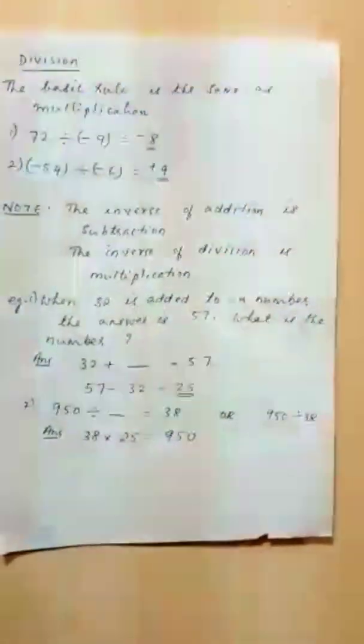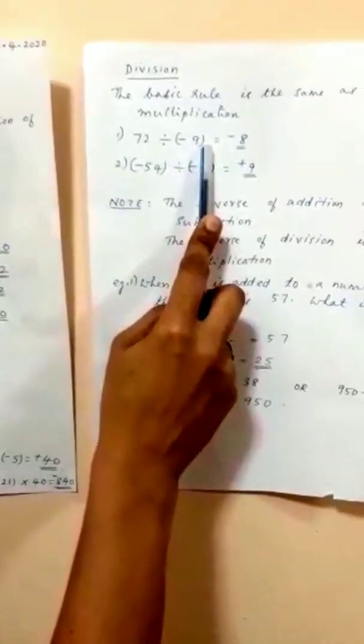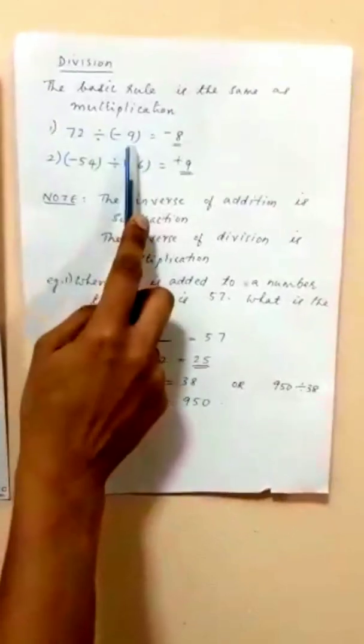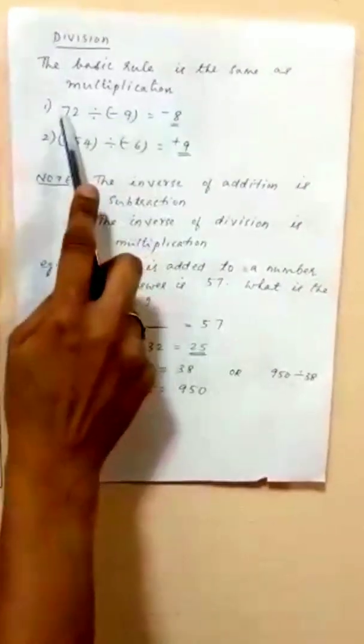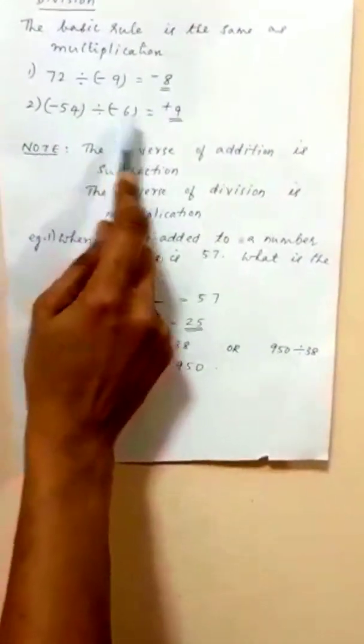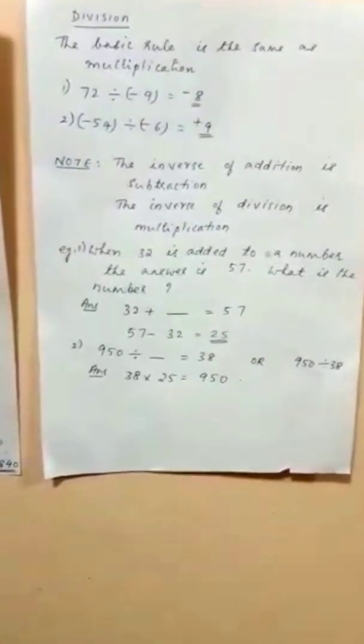For division, the same sign rules as multiplication apply. Example: 72 divided by minus 9 — 72 is positive, 9 is negative, opposite sign, so the answer is minus 8. Second example: minus 54 divided by minus 6 — 54 divided by 6 is 9, same sign both negative, so the answer is plus 9.